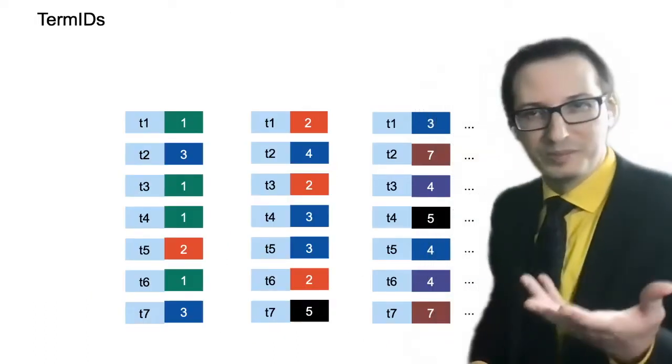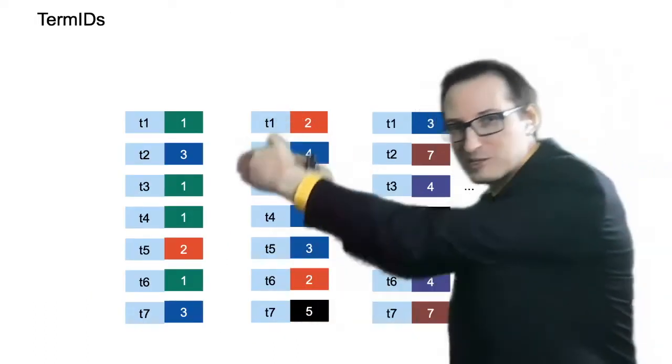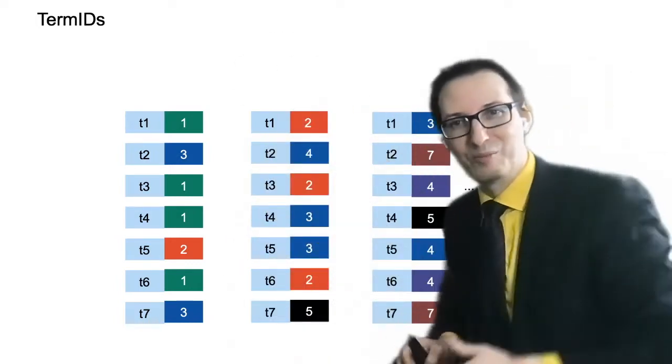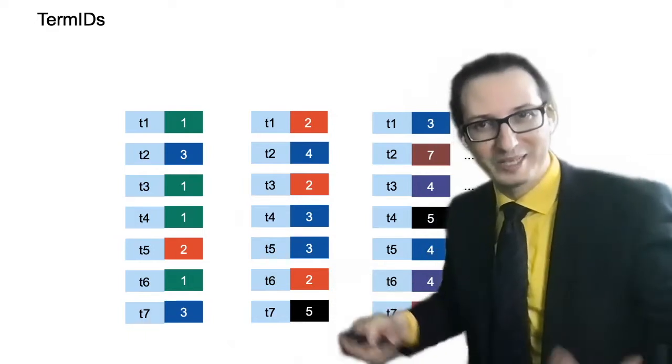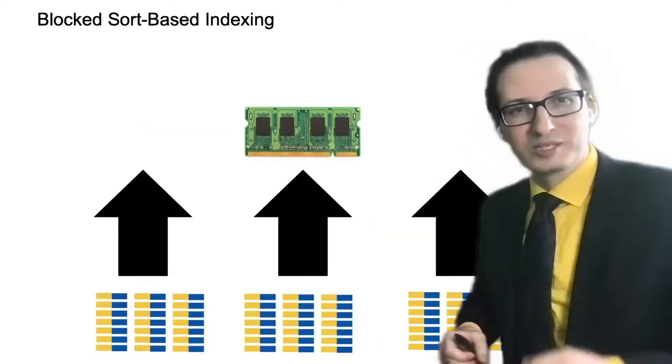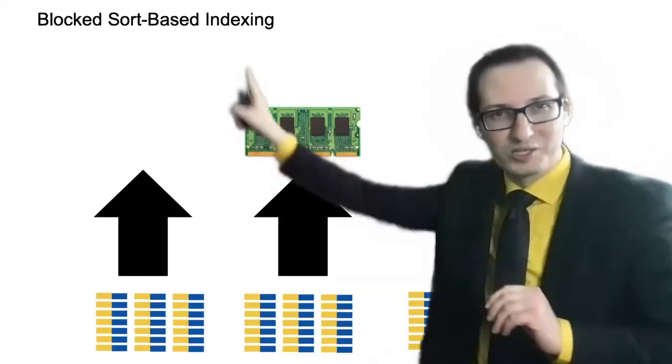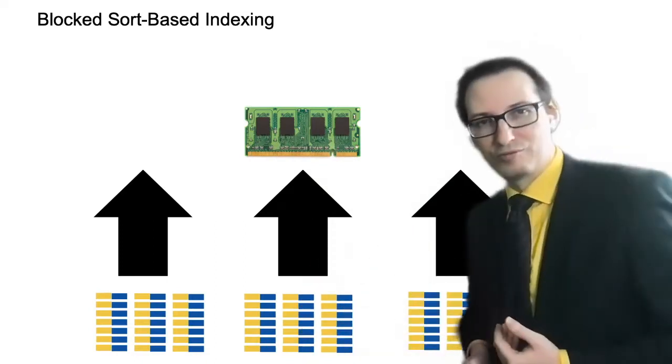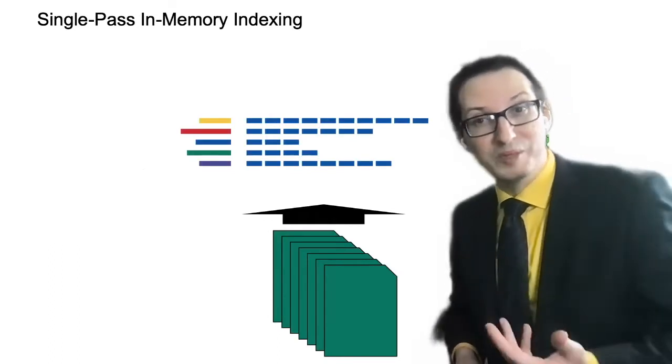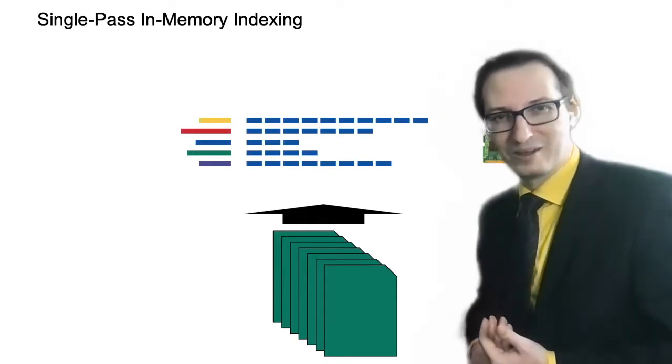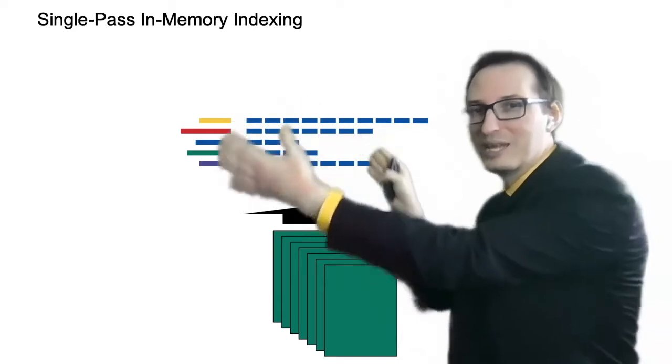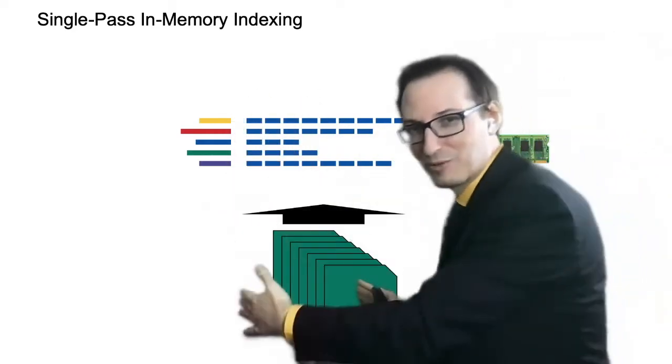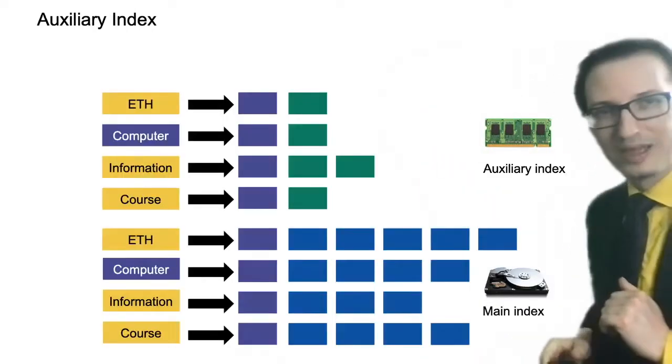We looked into this way using BSBI to replace the term with term IDs, because when we have all of these pairs flying around memory during construction, it takes a lot of space. We looked into BSBI, the sort-based thing right there, that is a first primitive way of doing it. Then we looked into SPIMI, which is the improvements, that directly creates a mini standard inverted index for every chunk of the input.